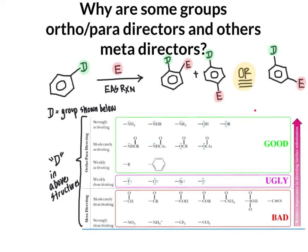In the last video, we used the chart at the bottom of the screen that I'm highlighting with my laser pointer in order to predict the products of reactions where we start with a substituted benzene derivative — such as the one I'm highlighting in the upper left screen — that had a directing group bonded to it. Each of these groups is shown in the chart below, where the line leading away from the group refers to where the aromatic ring would be, and we refer to each of these as directing groups.